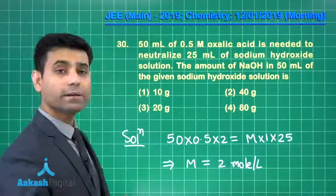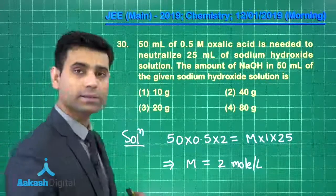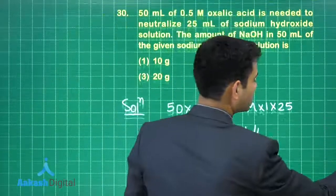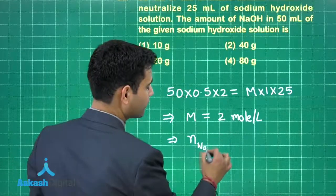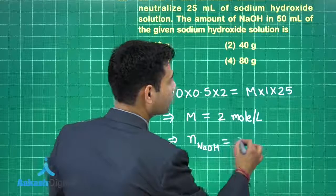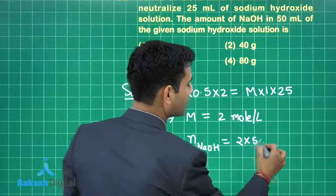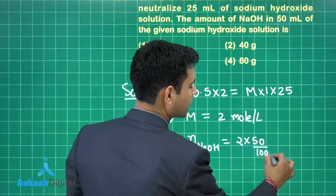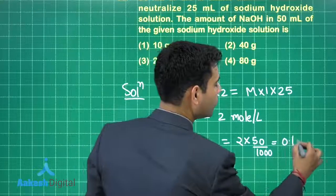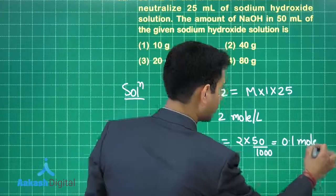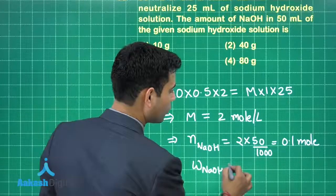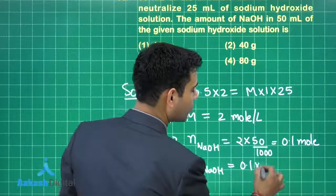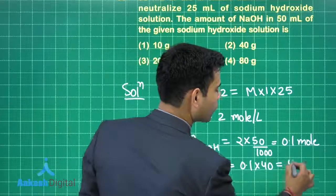So the amount of sodium hydroxide in 50 mL of the given sodium hydroxide solution is - first of all we will find the number of moles of sodium hydroxide. It is 2 into 50 by 1000, which is 0.1 mole. So weight of sodium hydroxide will equal number of moles into molar mass. So this is 4 gram.